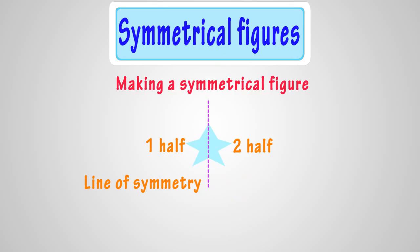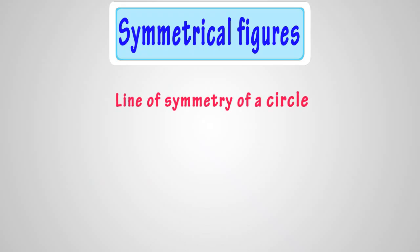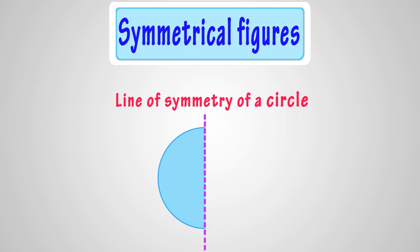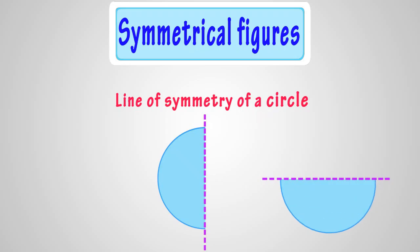Now, let's learn about the line of symmetry of a circle. Here we have a circle. Is it a symmetrical figure? Let's find it out by folding it halfway. Yes! If we fold it halfway, its one half covers the other half completely. So, it's a symmetrical figure.